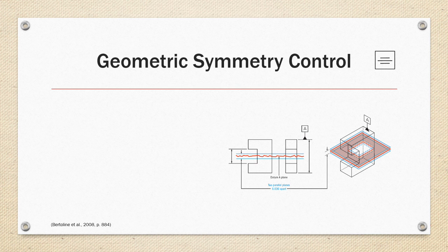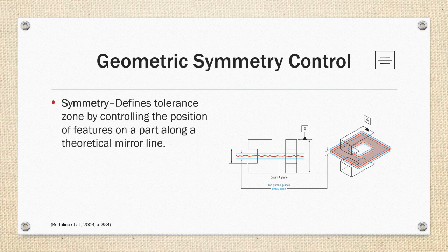Geometric symmetry control defines a tolerance zone by controlling the position of features along a theoretical mirror line. All features must fall within the zone of .03 apart, in the example on the right, in reference to datum A. This control has also become obsolete in the current version of the standard. Symmetrical controls are very difficult to maintain.